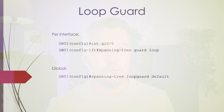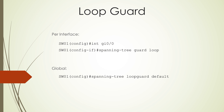So how do we configure it? There are two ways we can do this. We can enable this globally with the spanning-tree loopguard default command, or we can configure it per interface with the spanning-tree guard loop command. They're very similar but just different enough to be confusing.